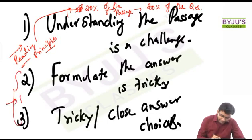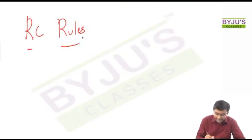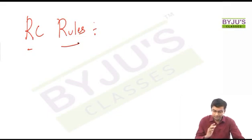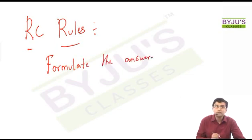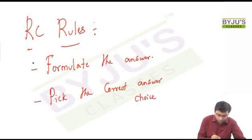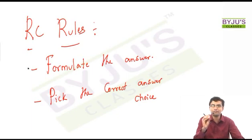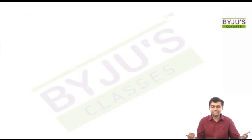To achieve these two goals is what I have my RC rules class for. The objective of the RC rules session — which we are going to do over the next three or four hours — is: first, to formulate the answers, and second, to help you pick the correct answer choice. Most of the time, the moment you formulate the answer you will get the right answer choice, but sometimes the examiners will put some very tricky answer choices to fool us. We will outsmart them by picking the right answer choice. This entire session is modeled very similarly to the way you solve mathematics questions.